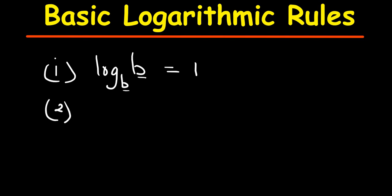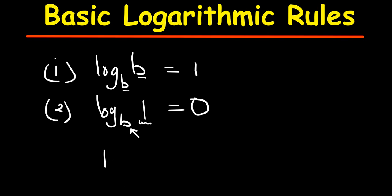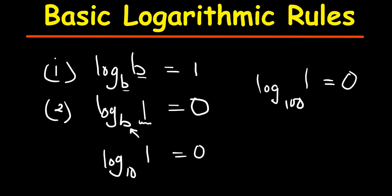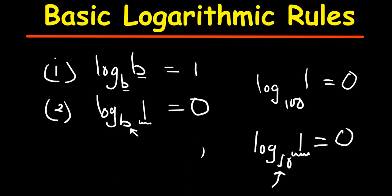The second rule: if I have log of any base B of 1, this will always be equals to 0. It doesn't matter the base you have — as long as what is in the middle is 1, your answer is always 0. For example, log base 10 of 1 is 0, log base 100 of 1 is 0, log base 50 of 1 is 0.